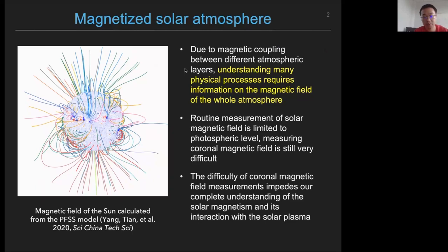Up to now, we can only have routine measurements of the solar magnetic field in the photosphere using Zeeman effect. However, measurements of the magnetic field in the upper layers, especially the corona, are extremely difficult. So far, we still do not have a precise knowledge of the coronal magnetic field. Apparently, the difficulty of coronal magnetic field measurement significantly impedes our understanding of solar magnetism and its interaction with the solar plasma.